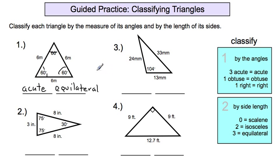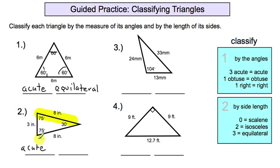Two names: one based on the angles, one based on the sides. Number two: the angles are 75 degrees, 75 degrees, and 30 degrees. All of those angles are under 90 degrees, making them acute angles, so we have an acute triangle. For the sides, this side and that side are both eight inches long, and the other side is three inches. We only have two sides the same length, so that's an isosceles triangle. This triangle is an acute isosceles triangle.